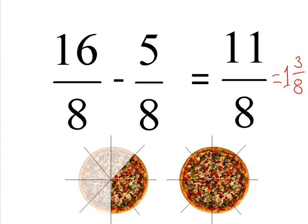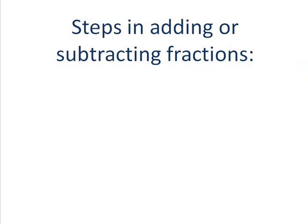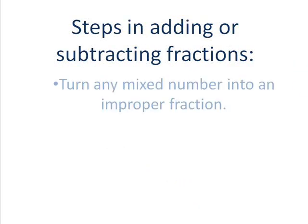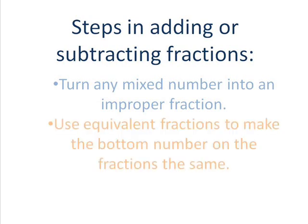Just to sum up, the steps involved in adding or subtracting fractions are as follows. The first thing you have to do is turn any mixed number into an improper fraction. The next thing you have to do is use the equivalent fractions, the idea of equivalent fractions, so that you can make the bottom numbers on the fractions the same before you actually go ahead and complete the question as required.